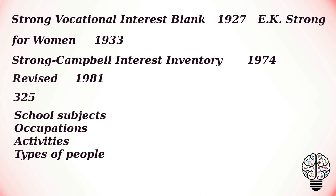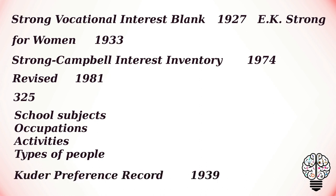The Strong-Campbell test is scored according to 162 separate occupational scales as well as 23 scales that group together various types of occupations. The other most commonly administered interest inventory is the Kuder Preference Record, originally developed in 1939.